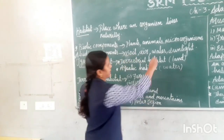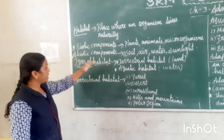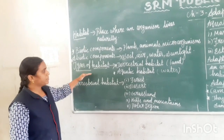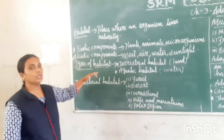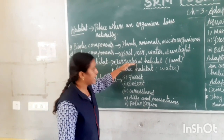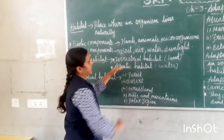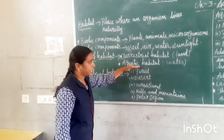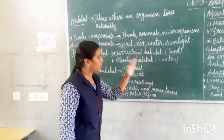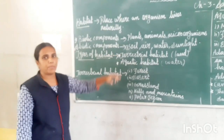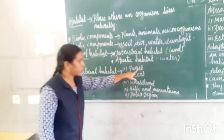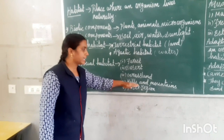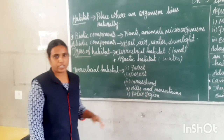The next topic is types of habitat. We have classified habitat into two types: terrestrial habitat and aquatic habitat. Terrestrial means habitat on land. We further classify terrestrial habitat into five types: forest, desert, grassland, hills and mountain, and polar region.